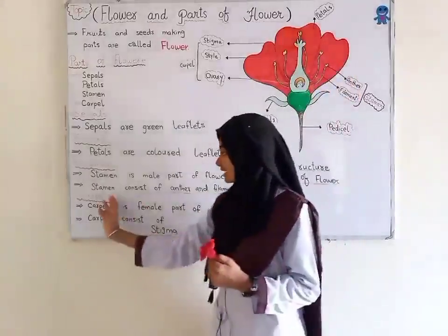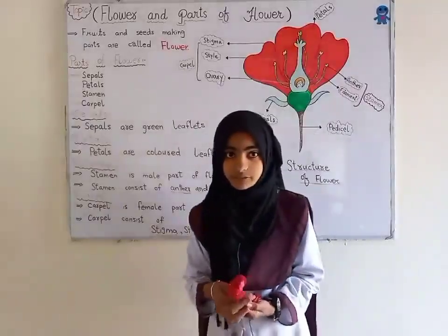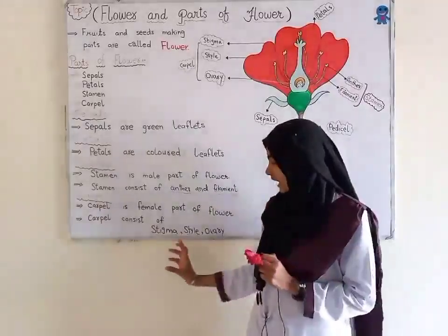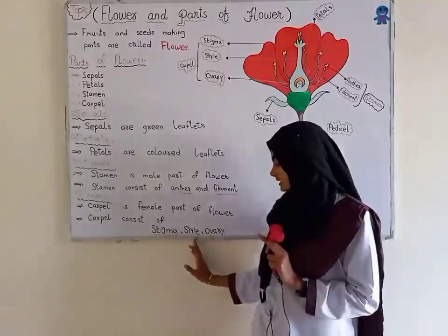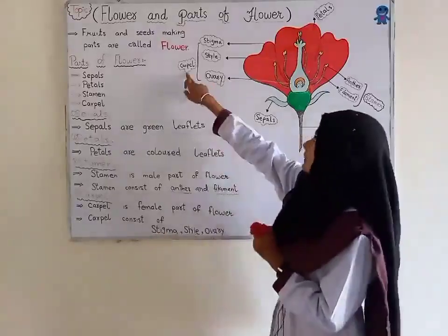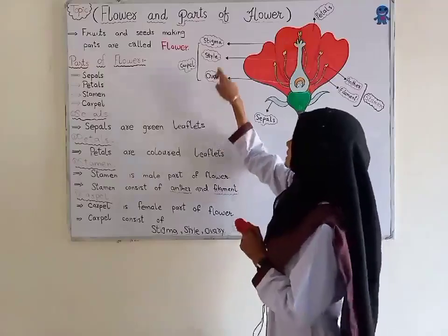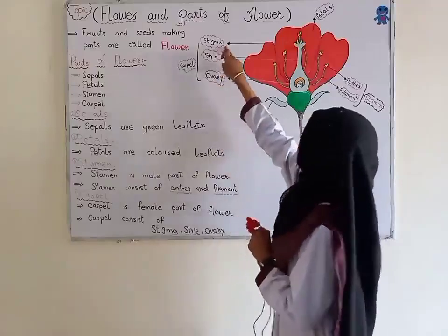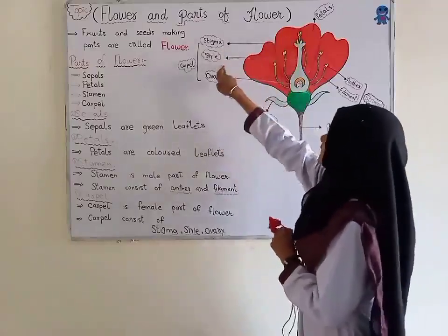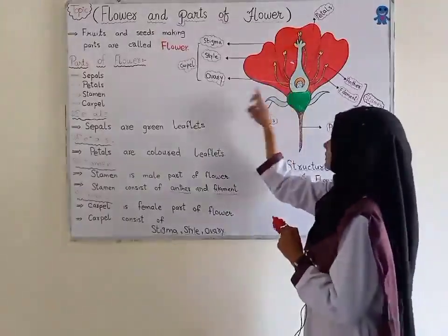Next is carpel. Carpel is the female reproductive part of the flower. Carpel consists of stigma, style, and ovary. Stigma is bottle-shaped, style is duct-shaped, and ovary is oval-shaped.